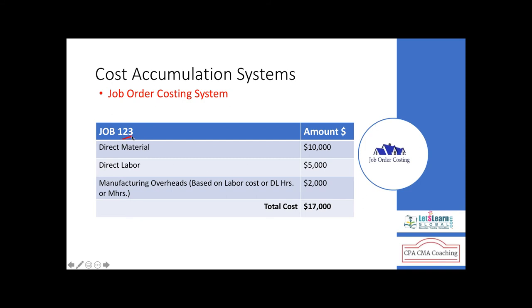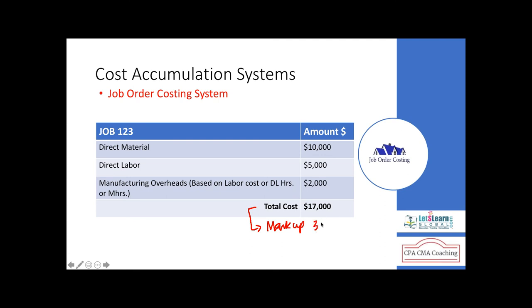Let's take an example. Job #123 requires material of $10,000 and direct labor cost of $5,000. Manufacturing overhead is 40% of labor cost = $2,000. Total job cost = $17,000. Adding a desired profit of $3,000 gives a selling price of $20,000.